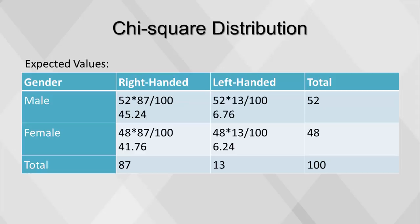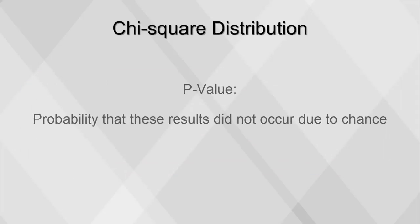Once the expected values have been computed, the chi-square test can be run. In Excel, the chi-square test function uses the actual table and expected table as inputs to calculate the p-value. This p-value is the probability that these results did not occur due to chance.